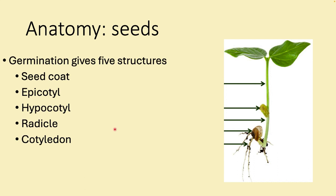When a seed germinates it has five identifiable structures. Looking at a eudicot: the cotyledons are the embryonic leaves — there are two of them in a eudicot. The epicotyl is the area above the cotyledons; the hypocotyl is below. The seed coat is the outer covering, and the radicle is the embryonic root.